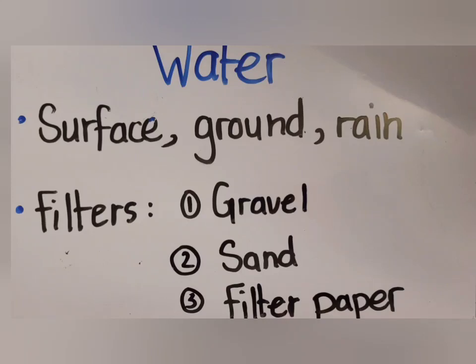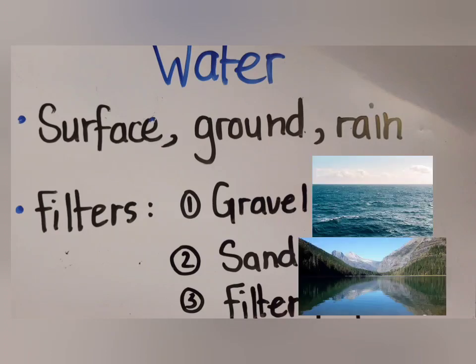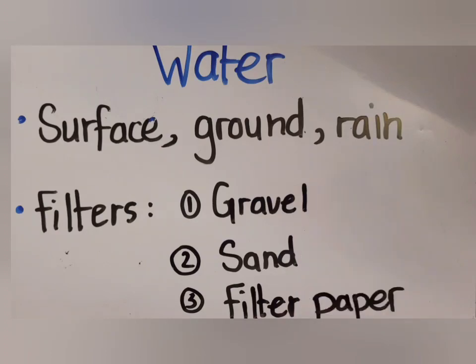Now let's start with the lesson on Water. The first thing we need to know is the sources of water. We can get water through different sources. The first one is surface water, which means water I can see with my own eyes — rivers, lakes, and seas. Because the water is above the surface of the land and I can see it, I call it surface water.